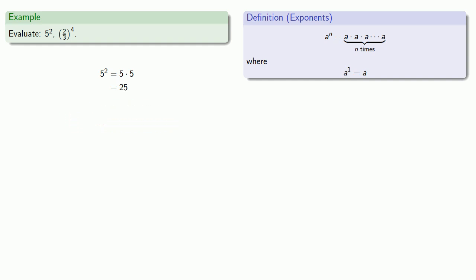2 thirds to power 4 says that we're going to take 4 copies of 2 thirds and multiply them together, which gives us 16 over 81.